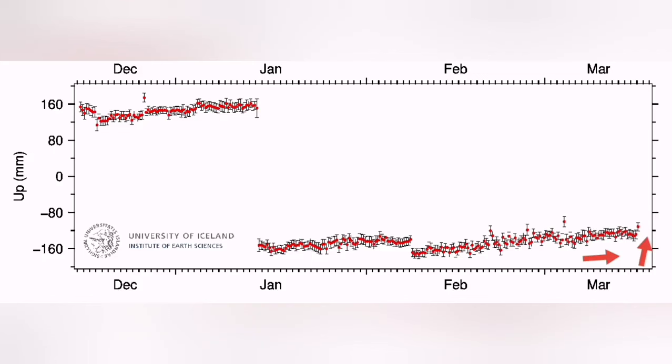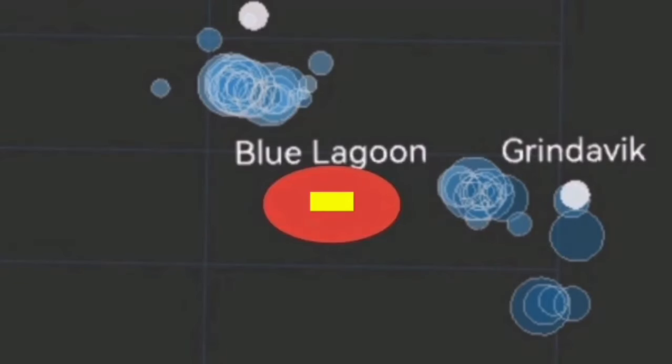Further down toward the east of Grindavik, we have this AUSV, which shows some uplift due to the accumulation of magma. Not as much as the previous one.